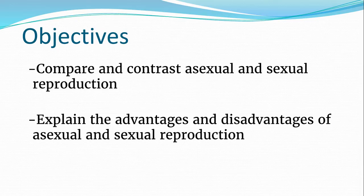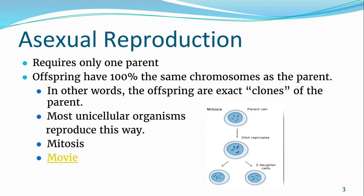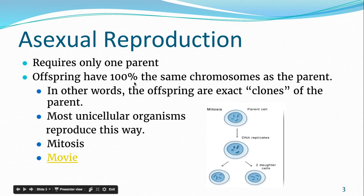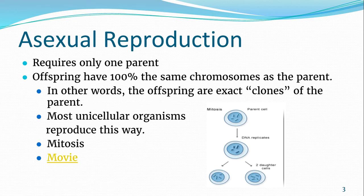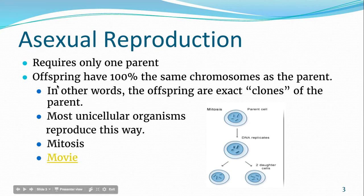We're going to start by talking about asexual reproduction and what that means. Asexual reproduction requires only one parent, and the important characteristic is that the offspring produced from asexual reproduction have 100% the same chromosomes or DNA as the parent. Basically, the offspring are exact clones or copies of the parent. The organisms that mostly do this are the unicellular ones, such as bacteria or certain protists, but there are some multicellular organisms that take advantage of this as well.